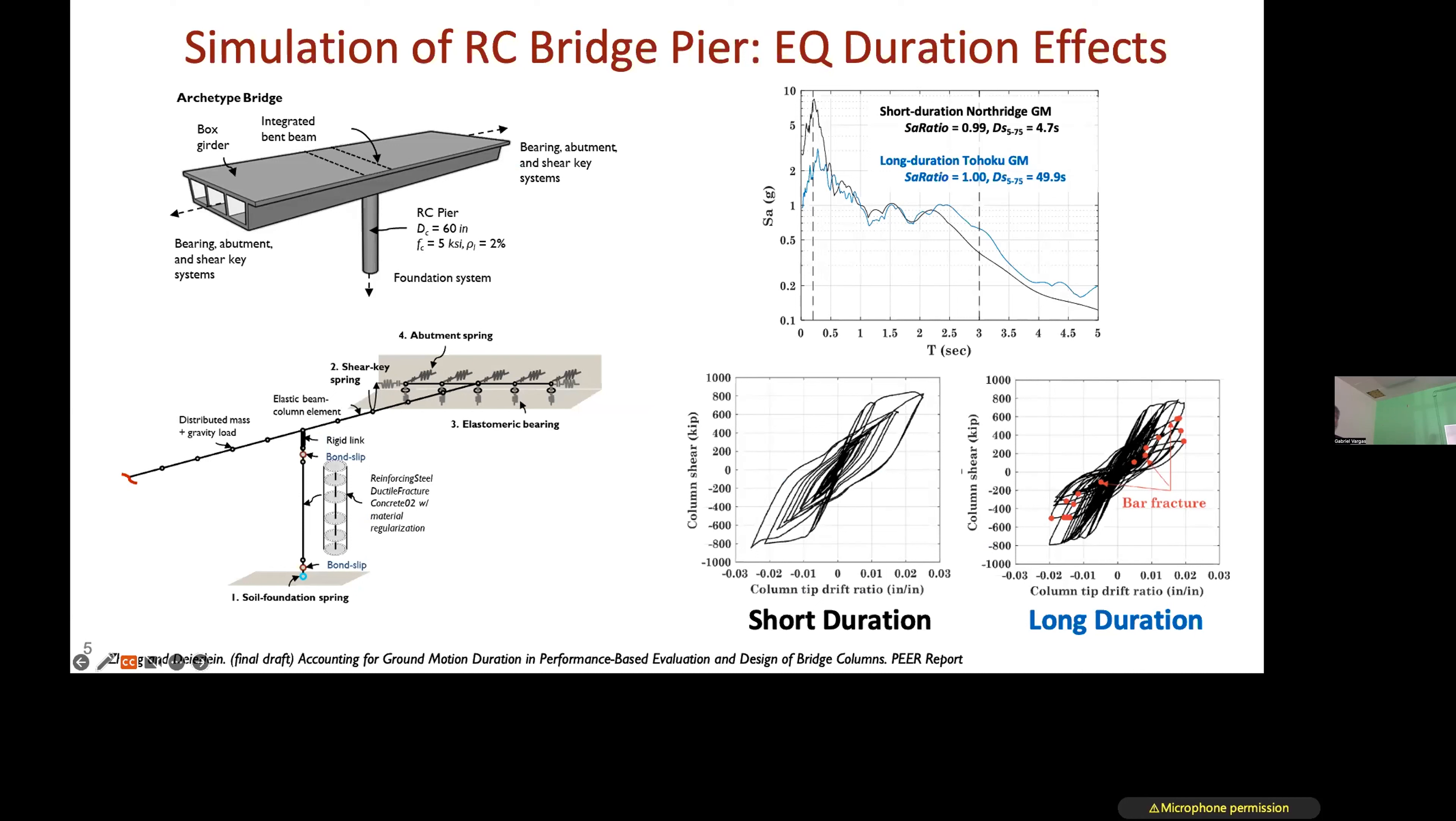We could build those into bridge models. We looked at a single-pier, two-span model, looking at duration effects. To tease out the duration effect, we take ground motions that have similar intensity and similar spectral shape, but one has much longer duration than the other. In this case, one with a five-second significant duration, one with 49 seconds. Under short duration, you have fewer cycles and no bar fracture. Under long duration, you're picking up bar fractures, and as you scale up these ground motions, you're picking up more collapses when fracture is included.